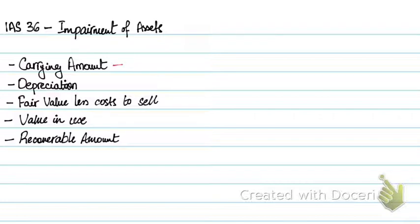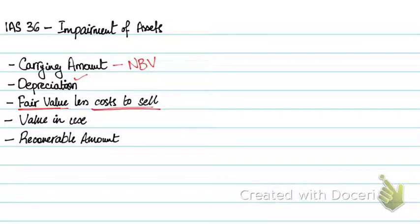Carrying amount is basically the net book value of the asset. We know what depreciation is. Fair value is basically the market price of the asset at this point — so if I go and sell my asset, the money I get in return is my fair value. Less costs to sell — cost to sell can include any interest payments, lease payments, or maintenance costs on the asset before I can sell it off, because I need to pay those expenses before actually selling. So fair value less cost to sell gives me my net market value.